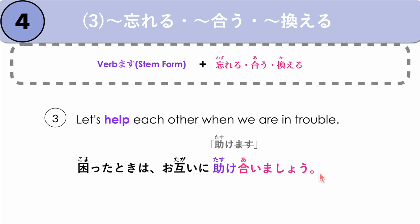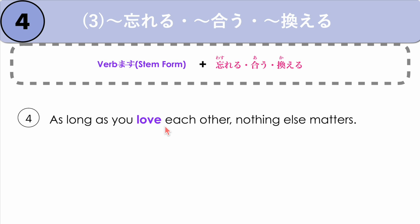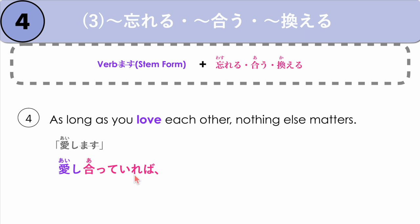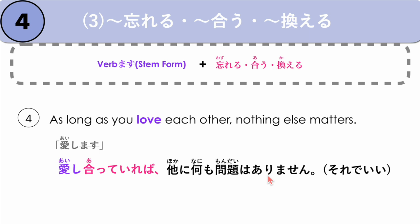Next example: as long as you love each other, nothing else matters. The verb is to love: ai shimasu. We get the stem ai shi, plus to do to each other: au. In this case we say ai shi atteireba — as long as you love each other — hoka ni, nanimo, mondai wa arimasen — or sore de ii, that's all that matters. Ai shi atteireba, hoka ni nanimo mondai wa arimasen.